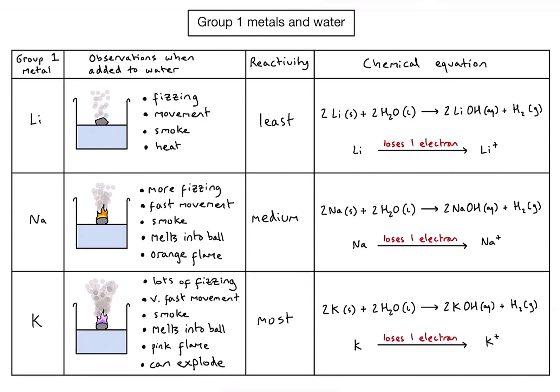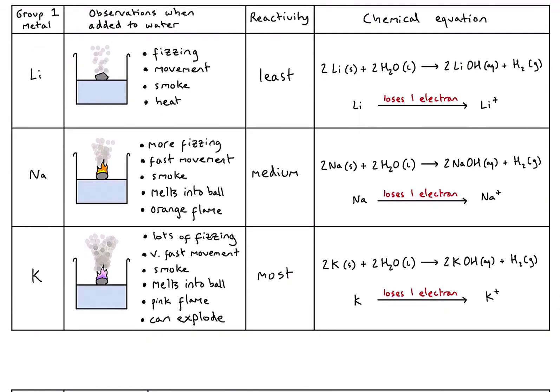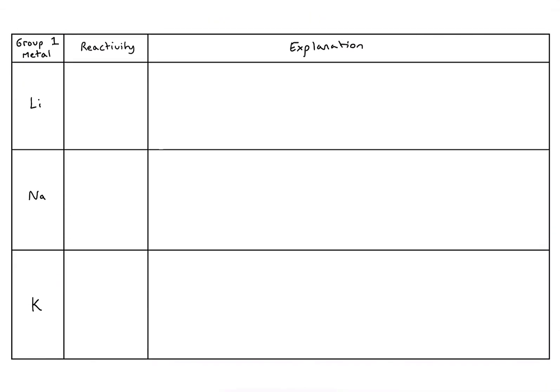So let's see if we can, using this information, try and explain why the reactivity increases down the group. First of all, we already identified the reactivity was lowest with lithium and then increasing down the group. To explain this, what we need to do is look at the electron arrangements of each of those elements. Lithium, which has three electrons, has two electrons in the first shell or energy level and one electron in the outer energy level. There I've written the electron arrangement above it and a Bohr model underneath just to represent where those electrons are.